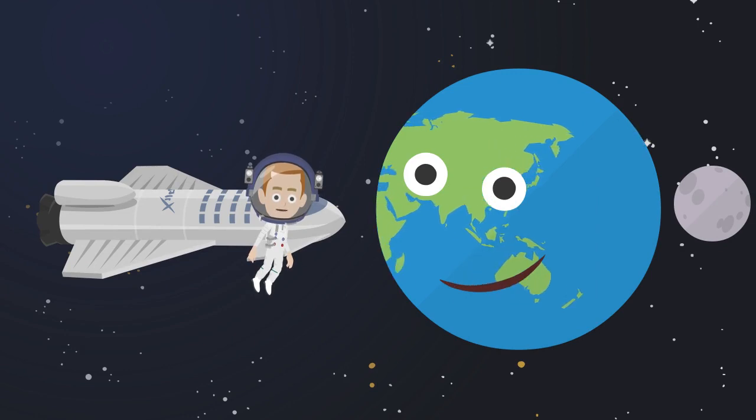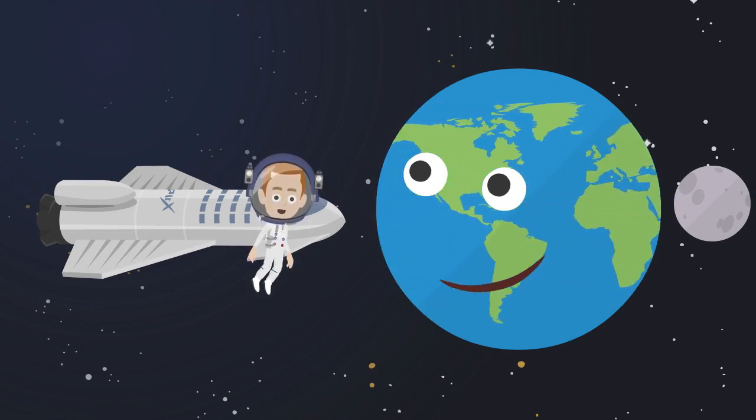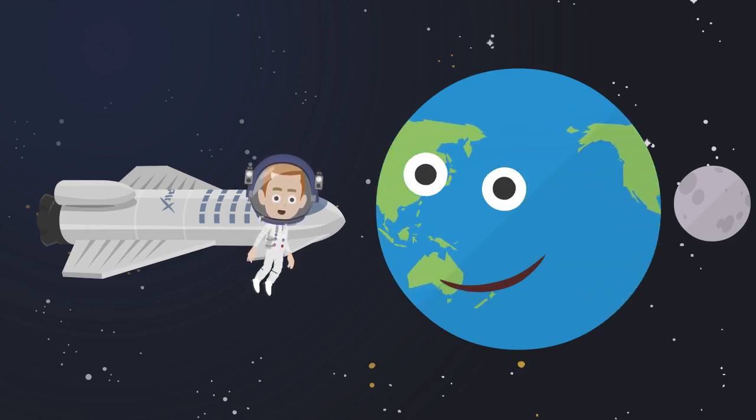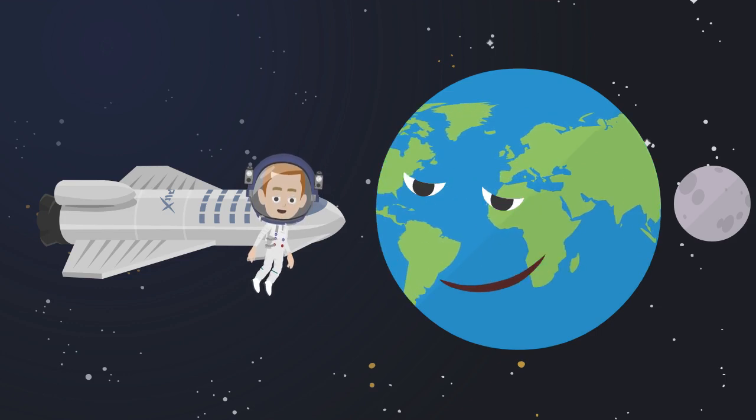This is Earth. Earth is the third closest planet to the sun. This is the only planet on which all the living things live. About 71% of the Earth's surface is made up of water.